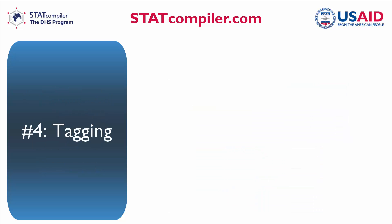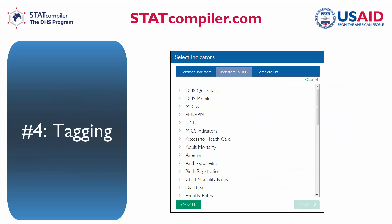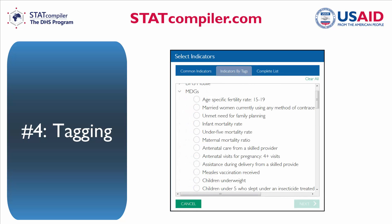Number 4. We have added a tagging function to make finding DHS data associated with international indicator sets much easier. This will be regularly updated to reflect current international indicators, such as the emerging sustainable development goals.